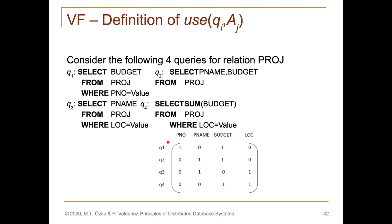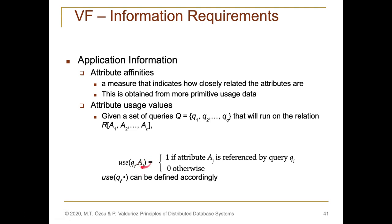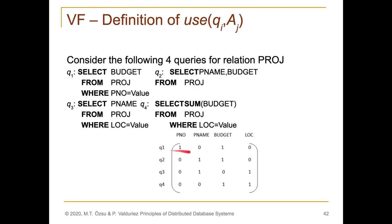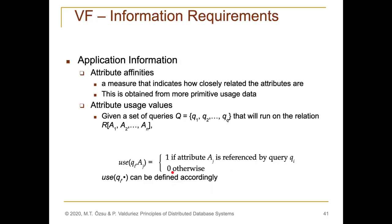The attribute usage matrix can be rendered as follows: in the rows, list all queries; in the columns, list attributes. The intersection defines the usage values. So if query 1 is accessing project number, then the corresponding value in the matrix will be 1. If query 1 accesses project name, the value will be 1, but in our case query 1 does not access attribute project name. This is how you construct the attribute usage matrix using the formula we have seen.